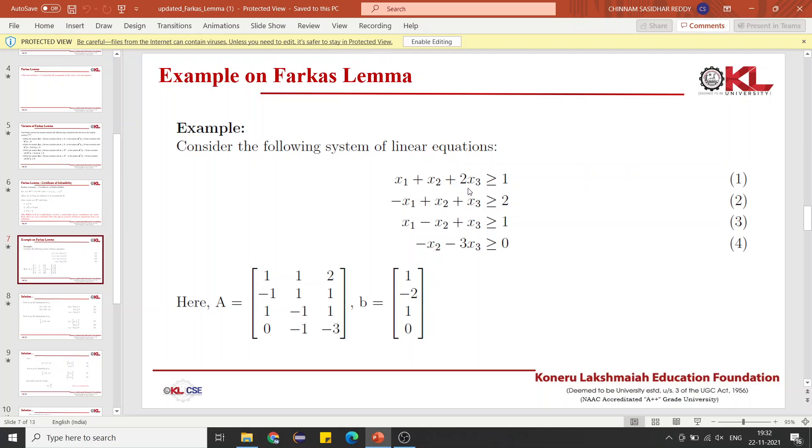We have 4 equations here and we have 3 variables in each of them. The first step is we will form matrix A and column matrix B. In matrix A, we write the coefficients of these variables x1, x2, x3 in each of these constraints.